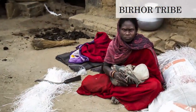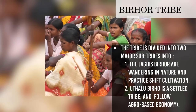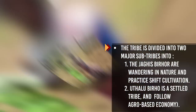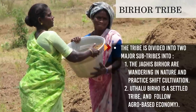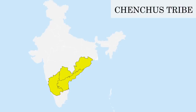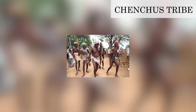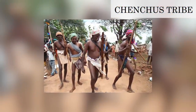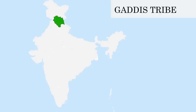The Baiga tribe is divided into two major sub-tribes: the Jahakish Bor, which is wandering in nature and practices shift cultivation, while the Uthalu-Briho is a settled tribe that follows an agro-based economy. Chencha Tribe: this tribe is found in the Nallamala hills of Andhra Pradesh, Karnataka and Orissa. They speak Chenchu language, which is of the Telugu accent. They are referred to as one of the primitive tribal groups still dependent on the forest, hunting for a living rather than cultivating land.